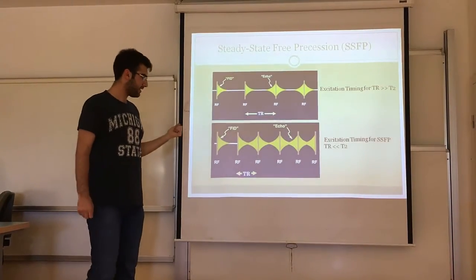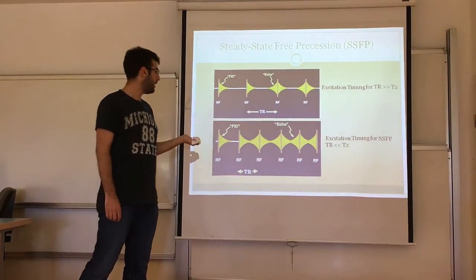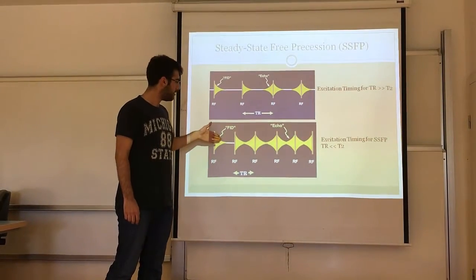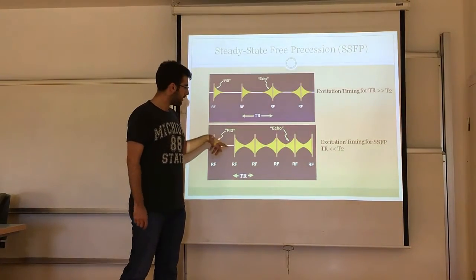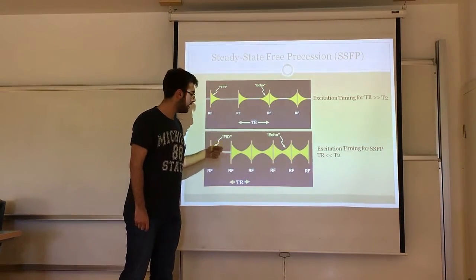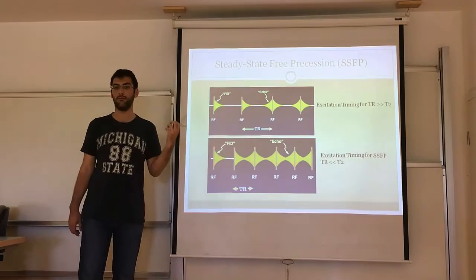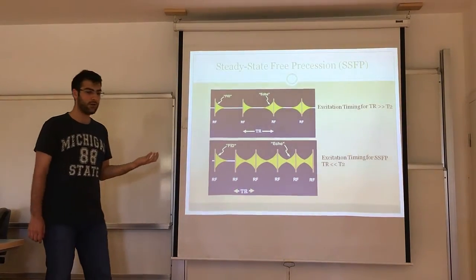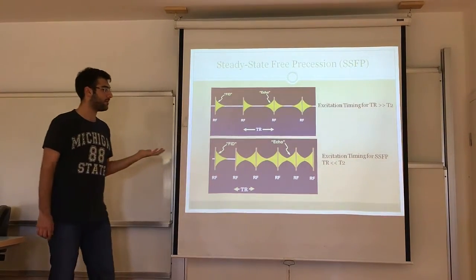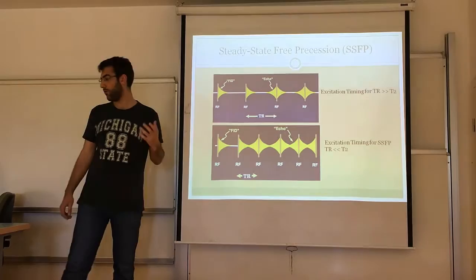This is the SSFP timing diagram. In SSFP we have a TR which is comparable to T2 or much smaller than T2. Therefore after each RF pulse our FID signal dies out, but before it dies out the echo signal emerges — so the echo signal and FID signal overlap in that region. This technique is used for very fast scanning, since TR is much smaller than T2. For example, for brain imaging the usual T2 values are around 60 or 70 milliseconds.